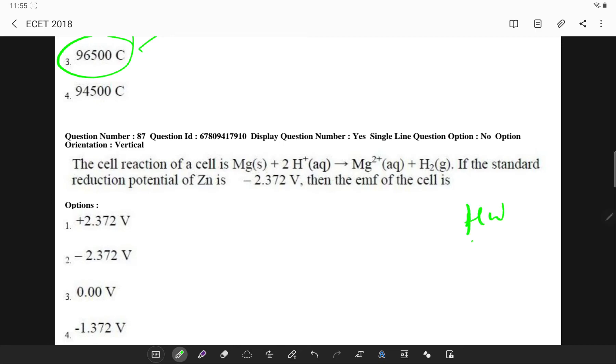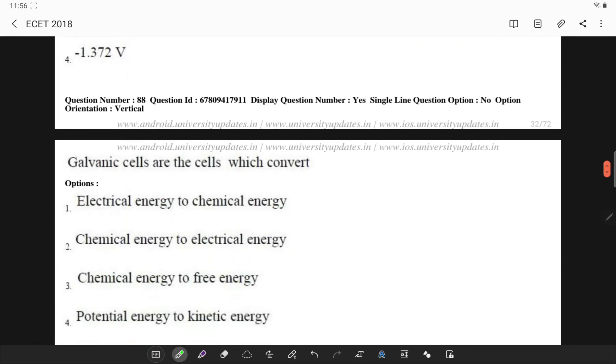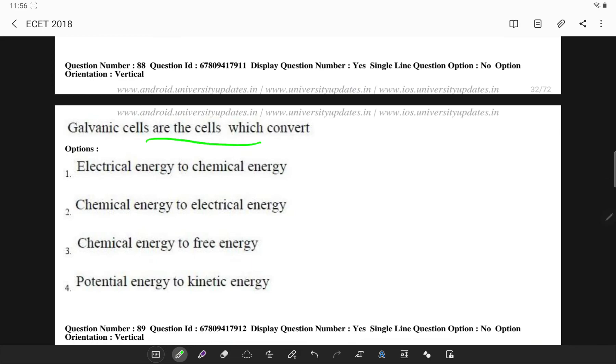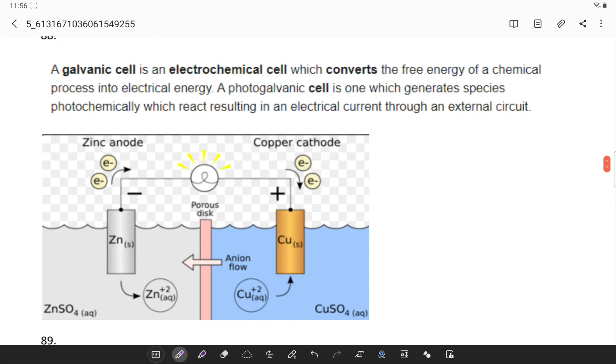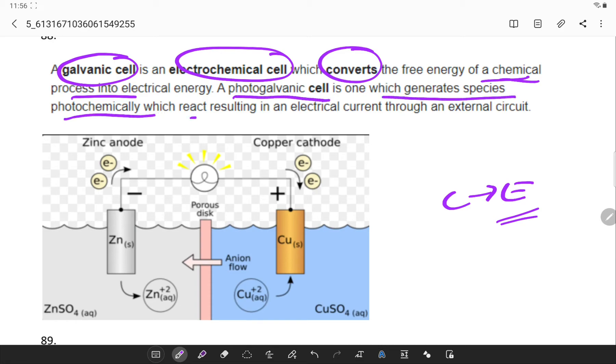Here you are supposed to calculate the EMF of the cell, so I'm giving this as homework. Galvanic cells are the cells which convert, it is a direct question, they convert chemical energy to electrical energy. Galvanic cell is an electrochemical cell which converts free energy of chemical into electrical energy. Remember the photogalvanic cell is one which generates species photochemically which results in electrical current to an external circuit.